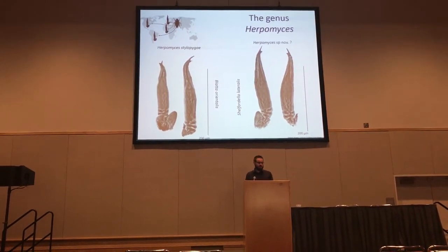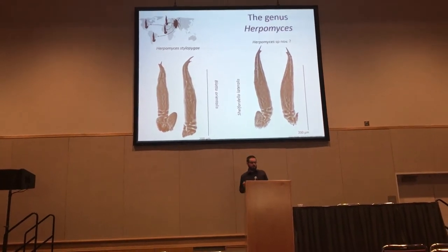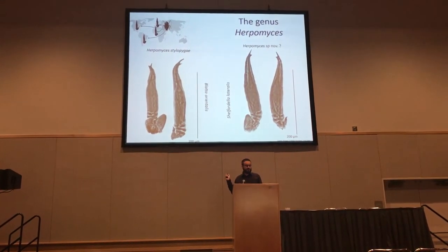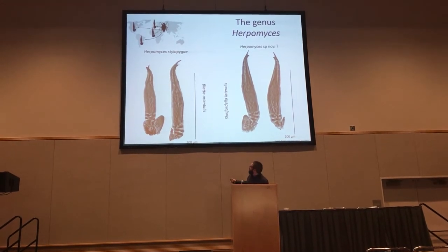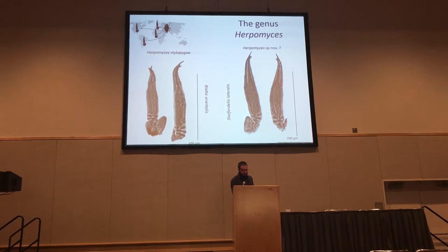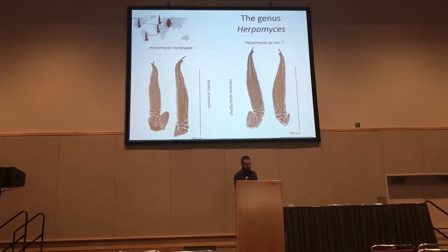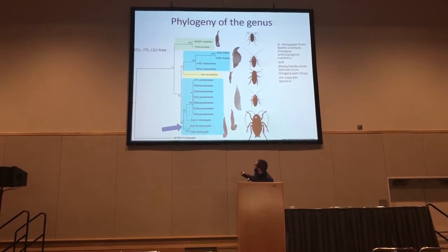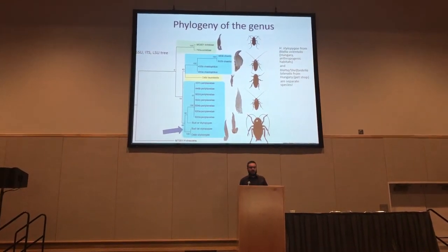When we looked at our samples of Herpomyces from Central Europe, we found a potential new species — this one from the Turkestan cockroach, which is Shelfordella lateralis. Morphologically, it is very close to the species Herpomyces stylopygae, known from Blatta orientalis, the oriental cockroach, which is a widespread species found all over the world. Our sample was morphologically very close to it, but we were not sure if it was a new species or just a morphological variation. We looked at the phylogeny of the genus and it was apparent that the samples from the Turkestan cockroach are indeed in a well-separated clade on this tree, and they should be described as a new species.